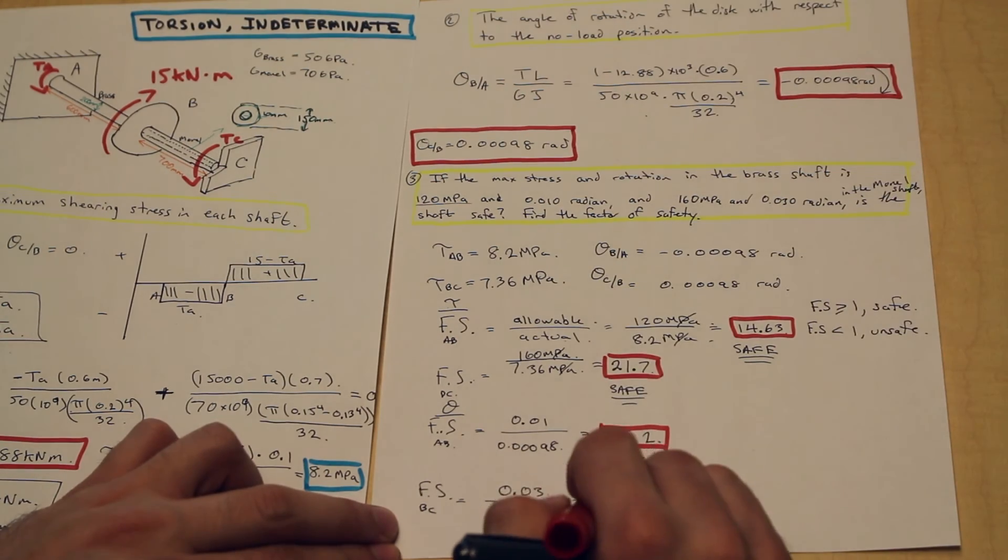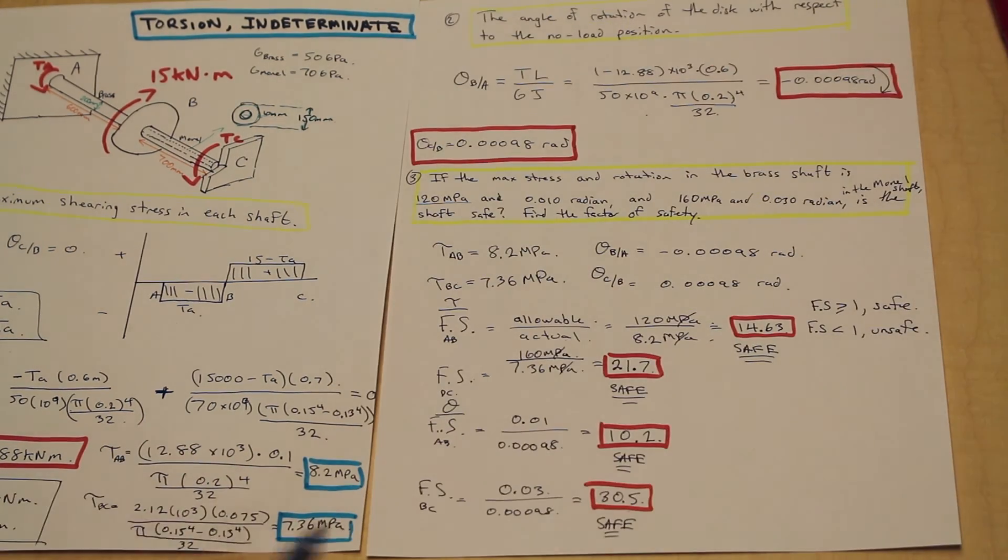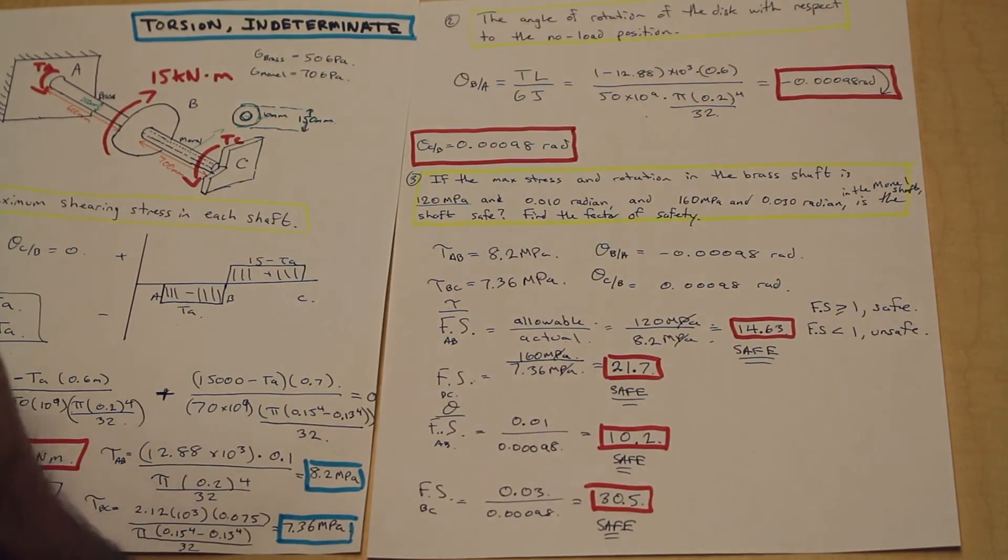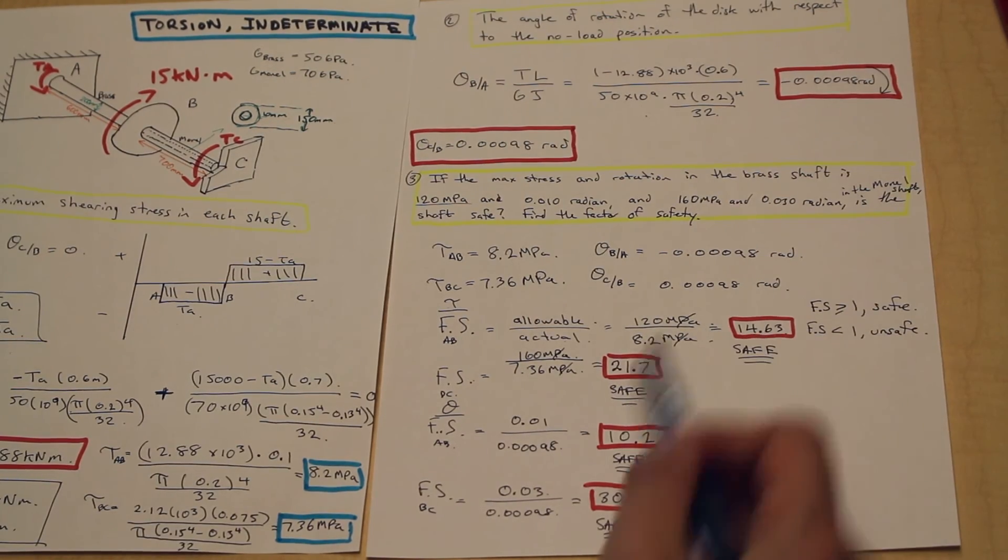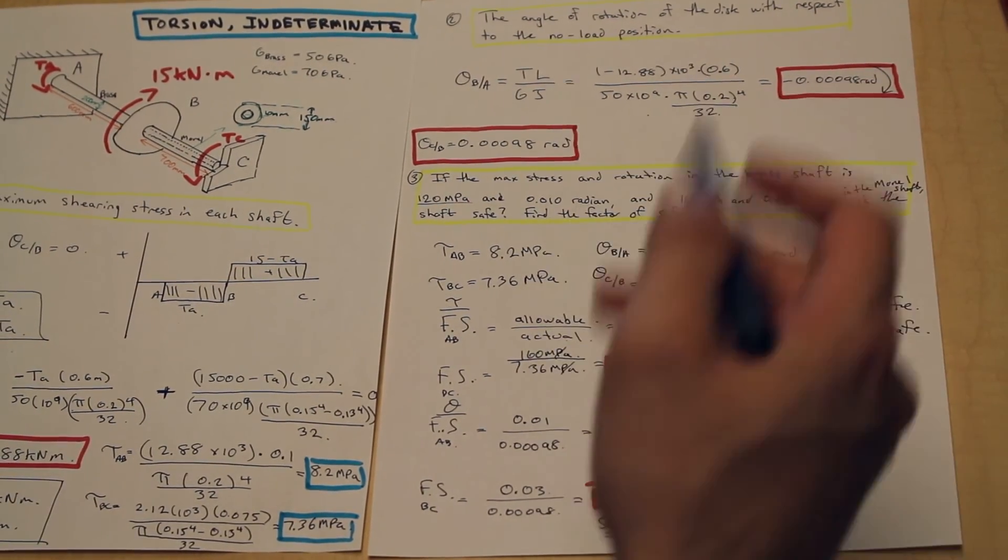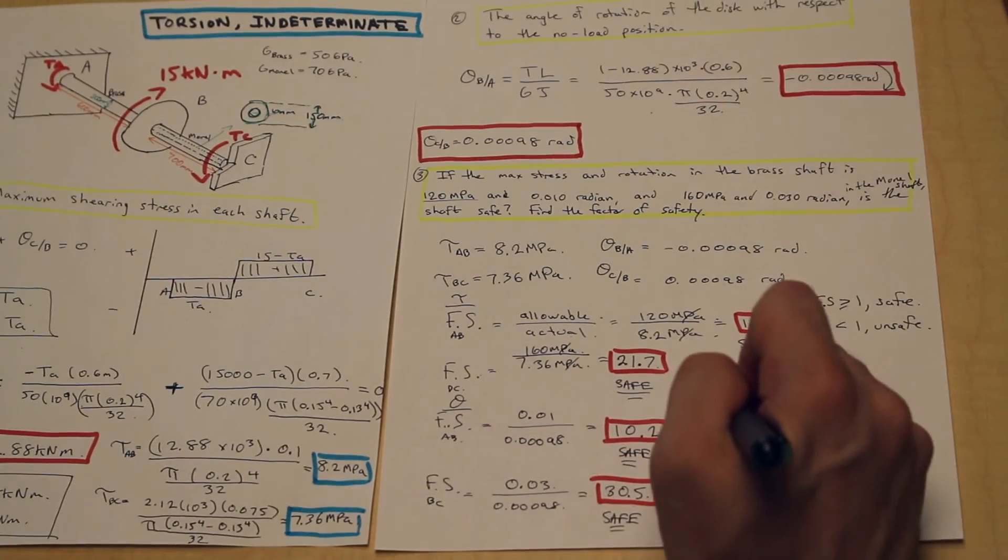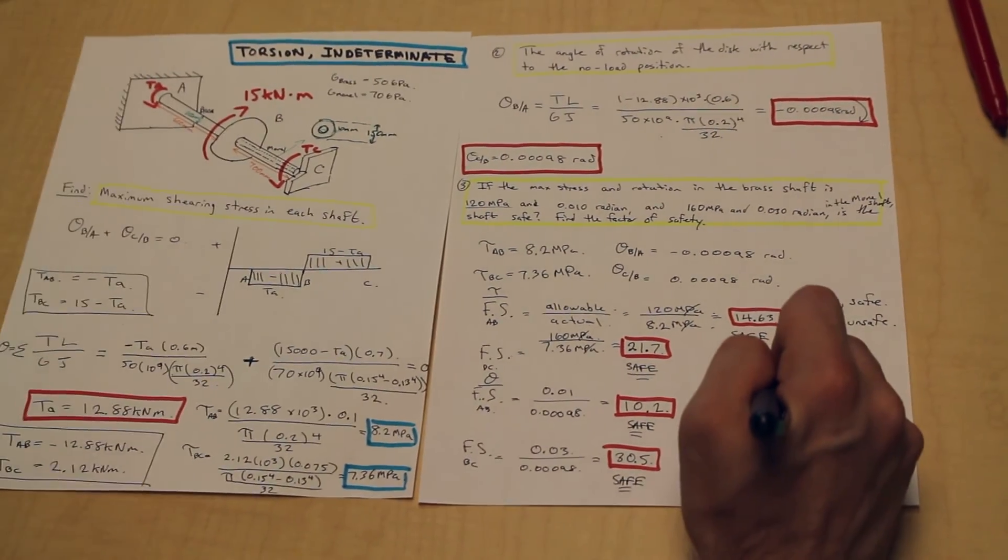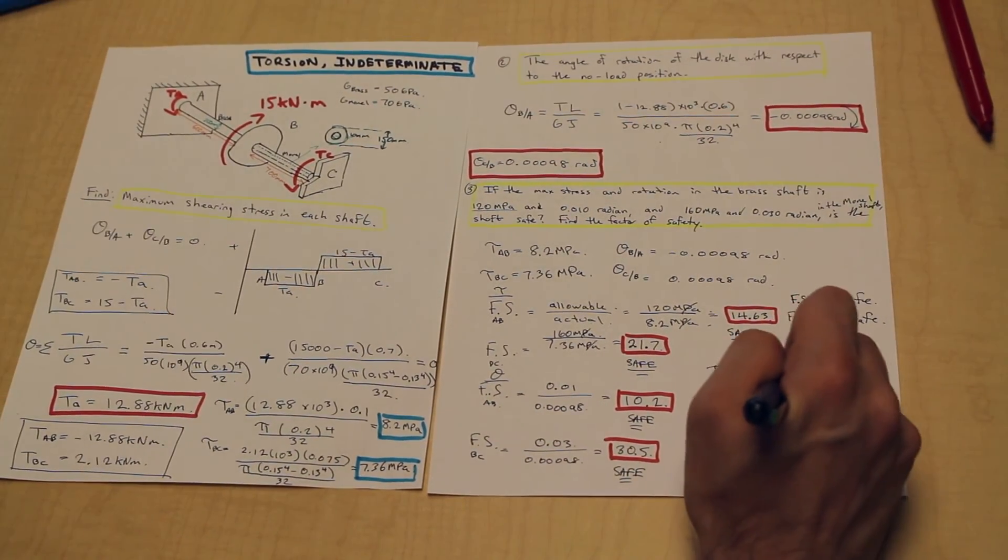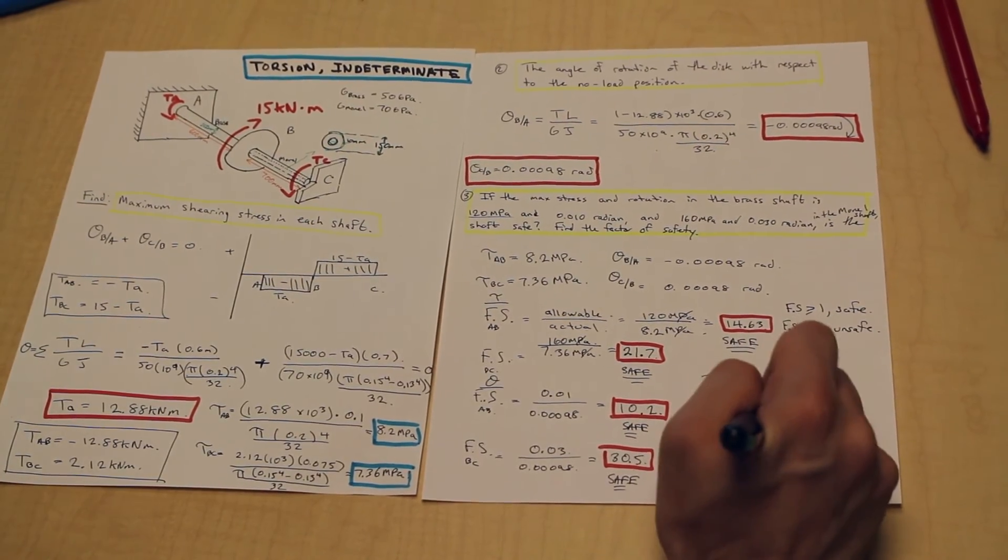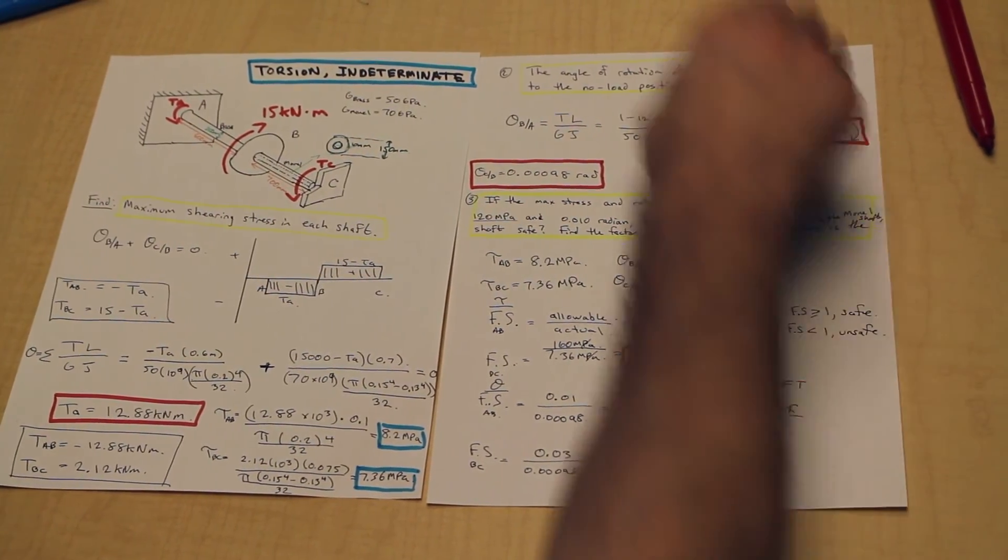Very safe. Can never be too safe. Let's do the factor of safety of section BC with respect to the angle of twist. We have 0.03 as allowable twisting, and as we discussed before, the angle of twist is going to be the same in both sections, and we're going to get a factor of safety of 30.5, very safe. So what does this mean? All of our factor of safeties in twist and shear are all above one, which means the shaft is safe.